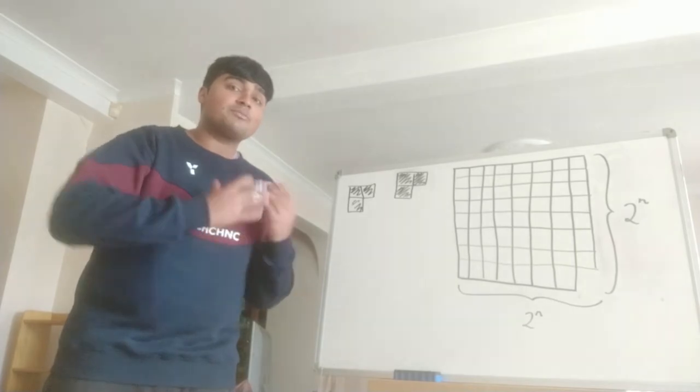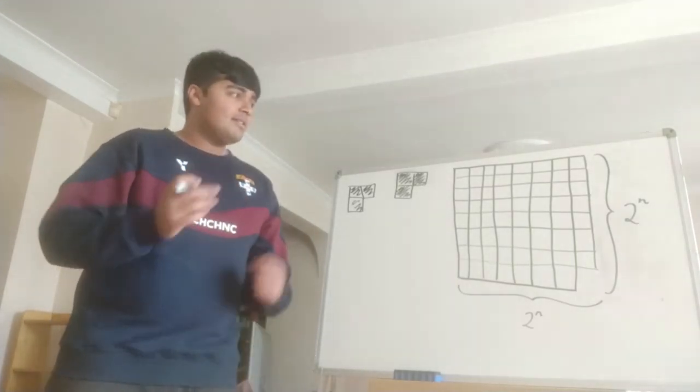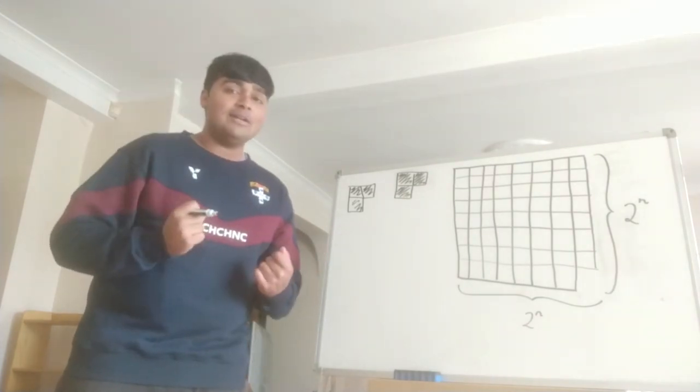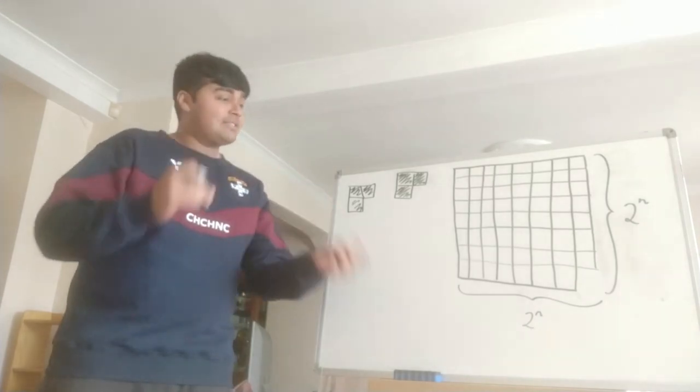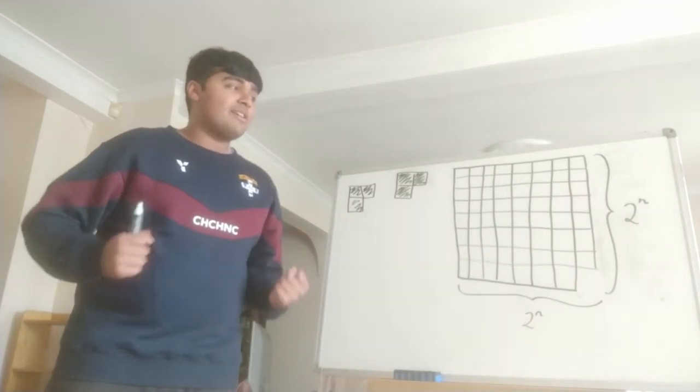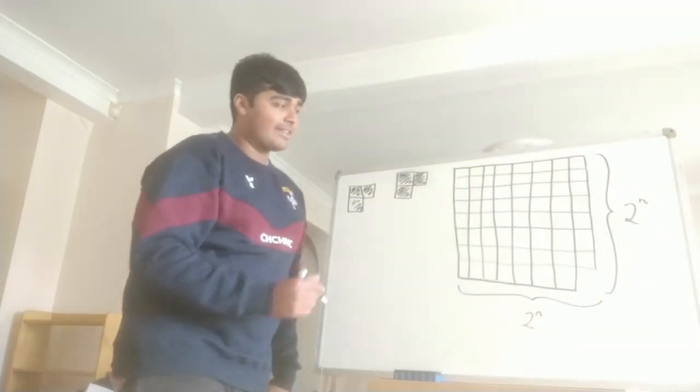Now we proceed by induction. Suppose we've shown it's true for all chessboards where the side length is at most 2^(n-1), and now we look at the case 2^n. We're going to use a nice trick - we're actually going to split this board, cutting it in half and then in half like that.